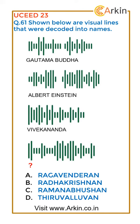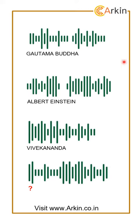Shown below are visual lines that were decoded into names, so there are certain lines shown and names are given. You have to find out what these lines represent — which of these options will be correct. Let's try to find out the relation between the lines and these letters.